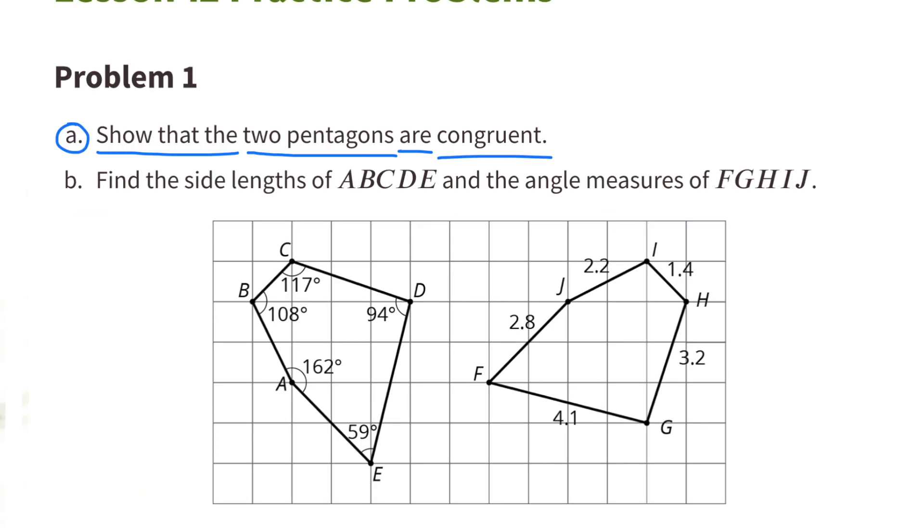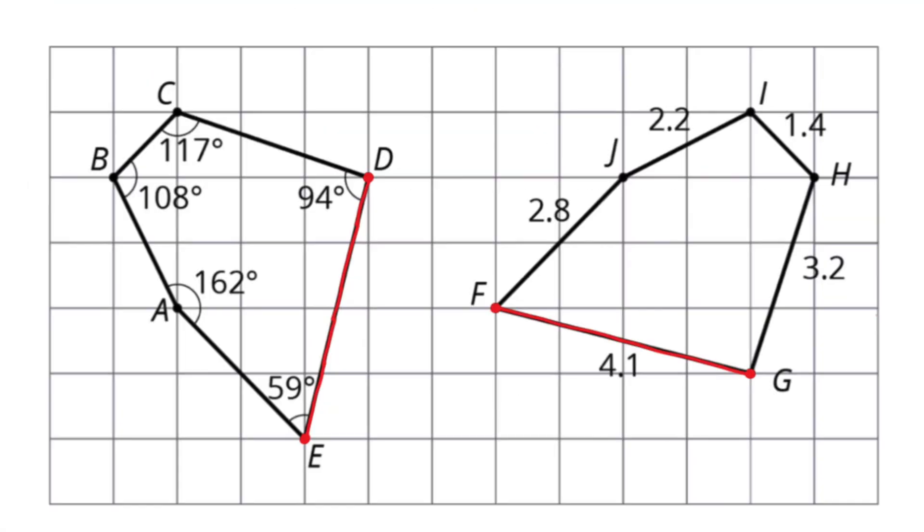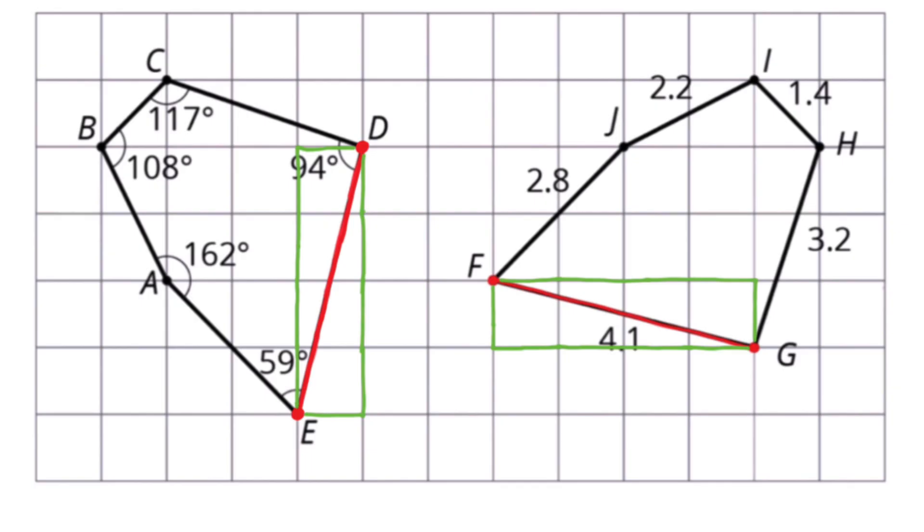Number 1. A. Show that the two pentagons are congruent. Segments D.E. and F.G. are the same length, so they're congruent.